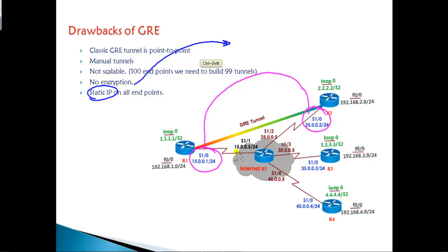If these IP addresses are not static, if they are using DHCP or given by the provider and they keep on changing, in that case your tunnel interface will go down automatically because the tunnel is established based on the reachability between the source and destination.